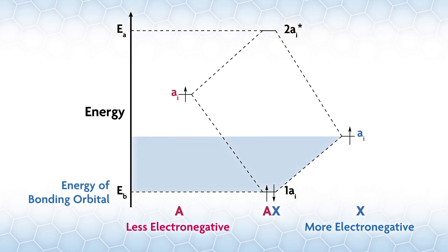The energy of the bonding orbital, Eb, will be lower than the energy of the X orbital, but because it is closer in energy to X than A, it will have more X character. The energy of the antibonding orbital, Ea, is higher in energy than the orbital on A, and it will have more A character because it's closer in energy to A.